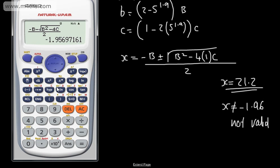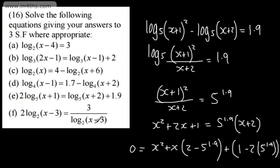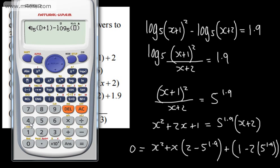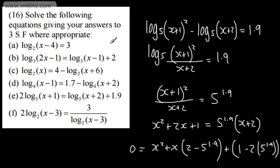So the valid solution is x equals 21.2. Checking: substituting back into 2 log to the base 5 of (x plus 1) minus log to the base 5 of (x plus 2) confirms we get 1.9. So that's the only valid solution.